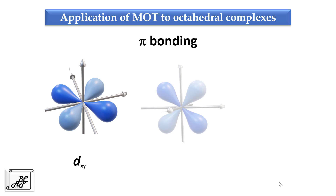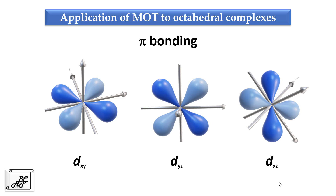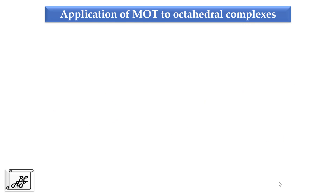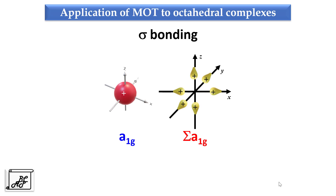The dxy, dyz, and dxz atomic orbitals, due to their shape, can participate in pi bonding. Now let's study the Mulliken symbols for various atomic orbitals. In case of the s orbital, the symbol is A1g. Similarly, there will be many A1g atomic orbitals in case of ligand orbitals, and these ligand orbitals will combine with each other to form ligand group orbitals, termed as Σ(A1g).